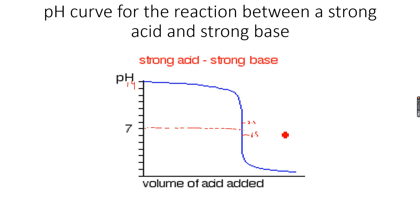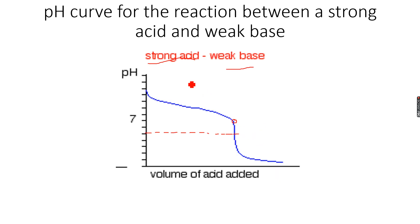For a strong acid and strong base reaction, I will choose an indicator that gives a pH color change within that range around seven. For a strong acid and weak base, if the equivalence point is at pH 5, I will choose an indicator that gives a color change in the range of 4.5 to 5.5, because the indicator must change color close to the equivalence point.